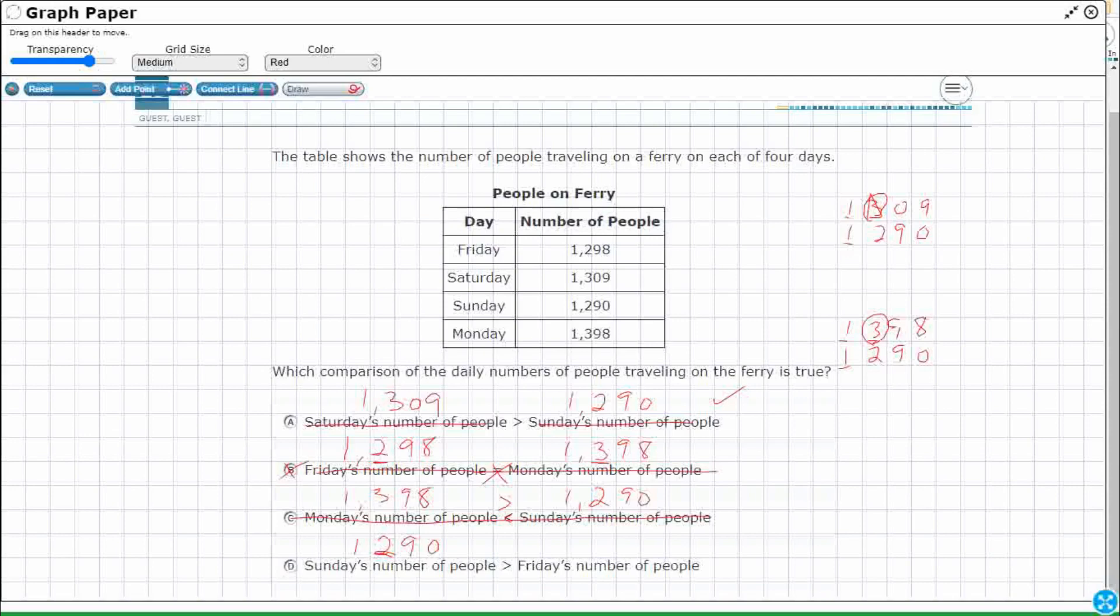Friday's number of people 1,298. Alright so we're going to compare 1,290 and 1,298. Those are very close. Look at this first digits the same.